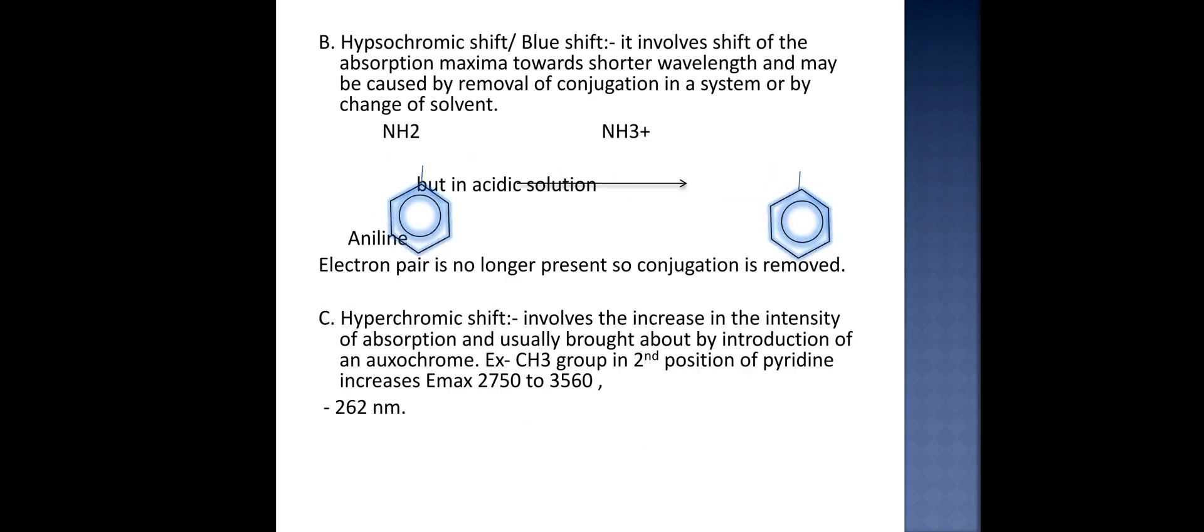Second is hypsochromic shift or blue shift. It involves the shift of absorption maxima towards shorter wavelength and may be caused by the removal of conjugation in a system or by change of solvent. There is an example of aniline which when it is present in basic or normal solution, there is no electropositivity in it. But in acidic solution it shows electropositivity, and as electron pair is no longer present, conjugation is also removed.